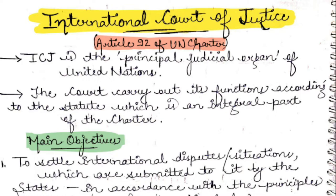ICJ means International Court of Justice. It is the principal judicial organ of the United Nations. Article 92 of the UN Charter states that ICJ is the principal judicial organ of the United Nations. The court carries out its functions according to the statute, which is an integral part of the charter.